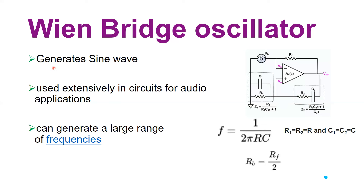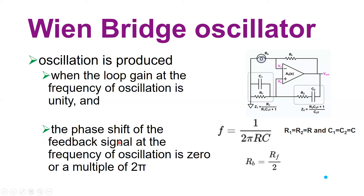In summary, the Wien Bridge oscillator generates sine waves and is extensively used in audio applications where you need to generate reference waveforms or clocks. It can generate a large range of frequencies in the kilohertz to hundreds of kilohertz range. Oscillation is produced when the loop gain is unity and the phase shift of the feedback signal at the frequency of oscillation is zero or a multiple of 2π.